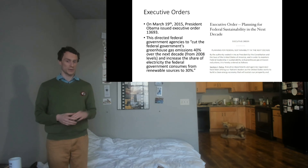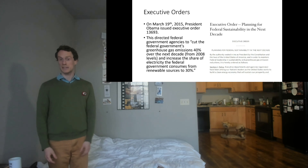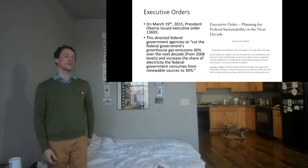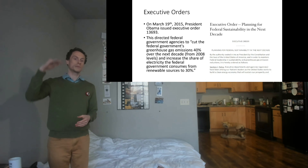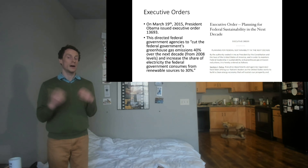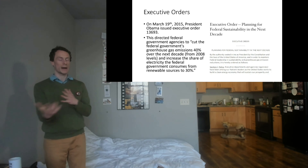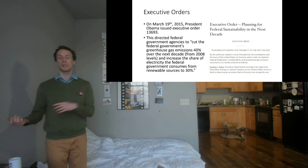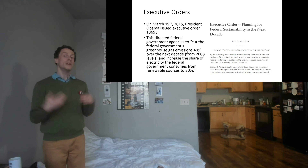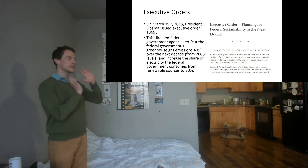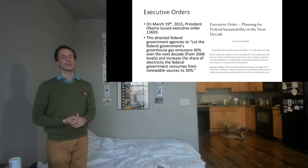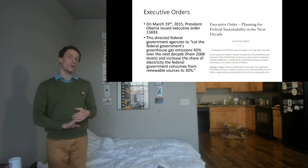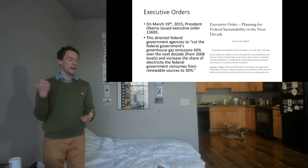An important example was Executive Order 13693 from 2015, which said federal government buildings and infrastructure were all going to reduce their greenhouse gas emissions by 40 percent over the next decade. This is a huge change — the federal government as a whole uses up a massive amount of energy. Even though this didn't introduce any new climate change legislation, just by changing the way the government operated, a huge environmental impact was achieved.